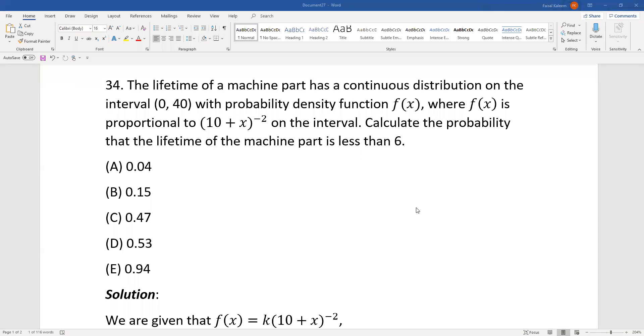The lifetime of a machine part has a continuous distribution on the interval 0 through 40 with pdf f(x), where f(x) is proportional to (10+x)^(-2). Calculate the probability that the lifetime is less than 6.